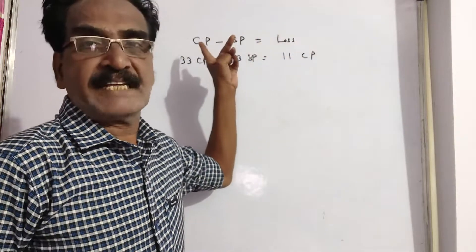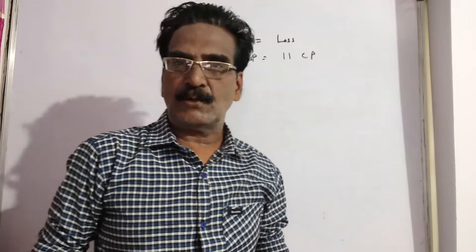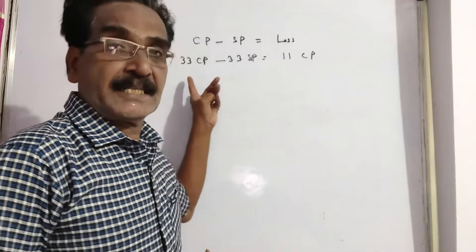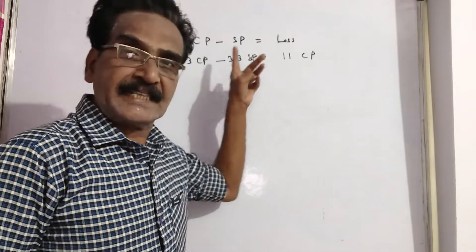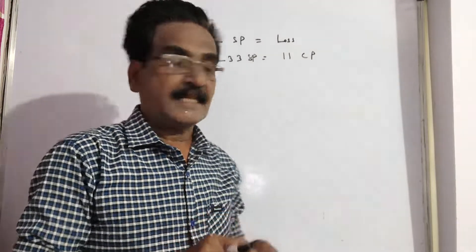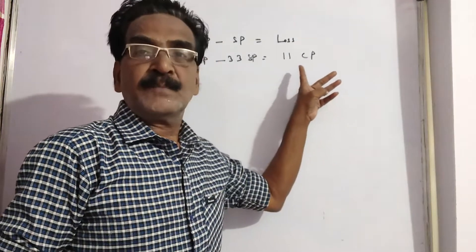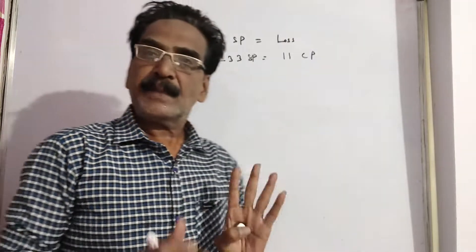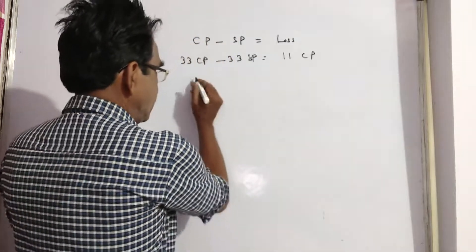Friends, you know loss is given by cost price minus selling price. So the loss on selling 33 meters is 33 meters cost price minus 33 meters selling price, which equals the loss on 33 meters. What is that? The cost price of 11 meters. So 33CP minus 33SP equals 11CP. It implies,